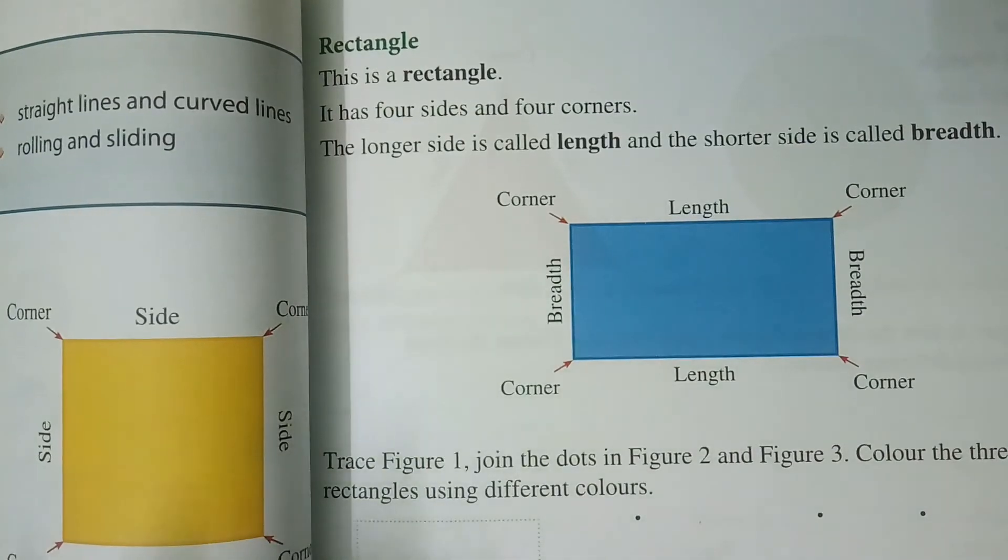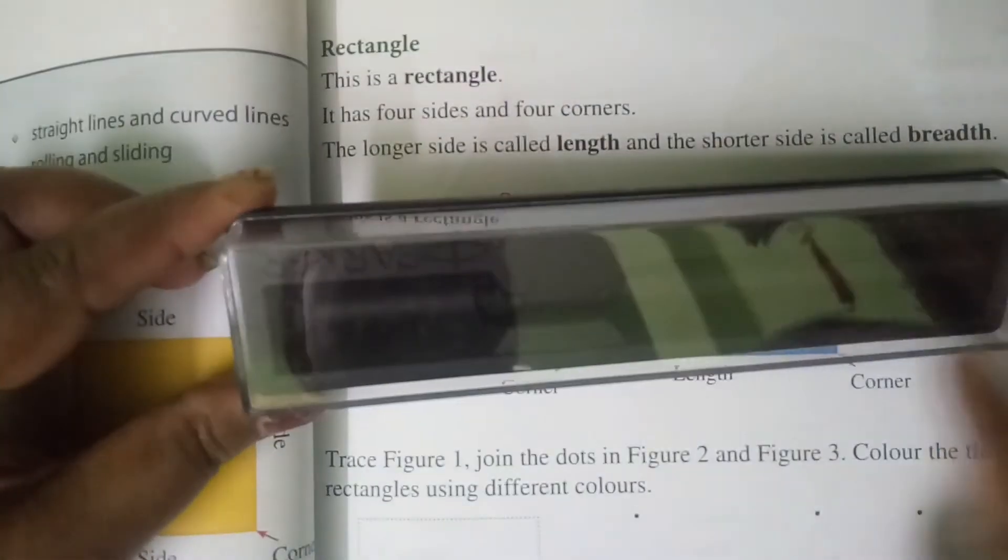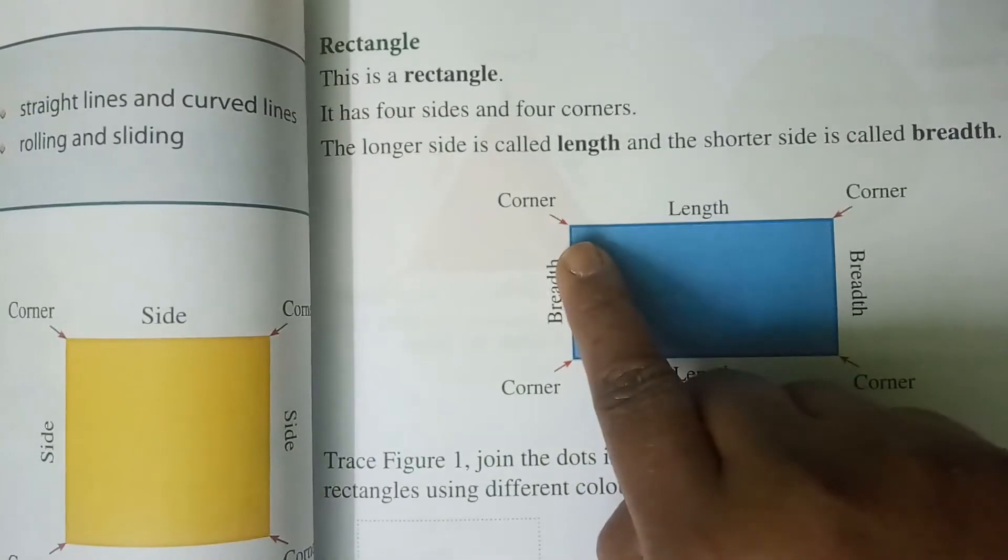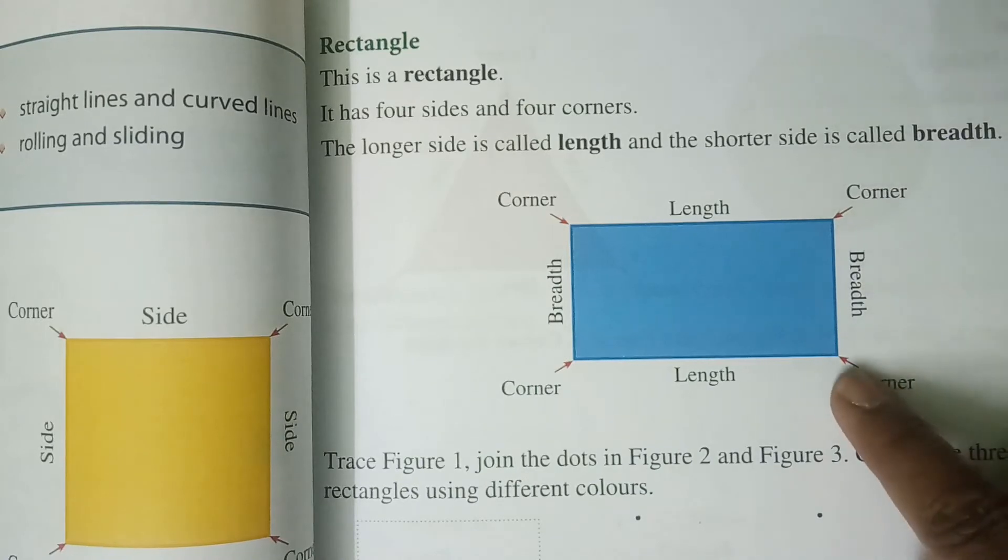Such type of objects will have a rectangle shape where the length is longer than the breadth.